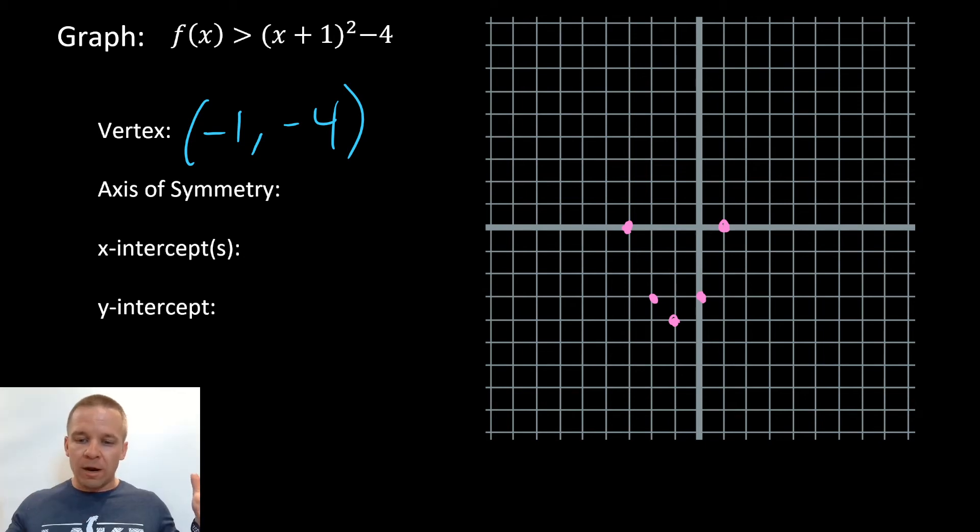All right, now we've got our graph, right? We've got our points for our graph. Now we need to graph it. Is it going to be solid or is it going to be dashed? It's greater than, strictly greater than, so it's going to be dashed.